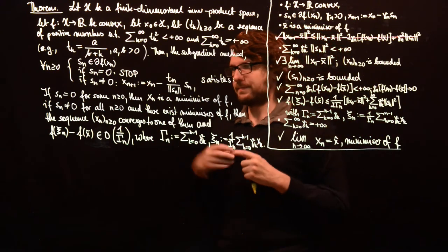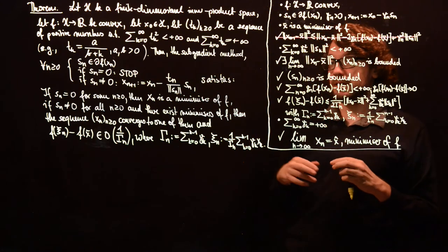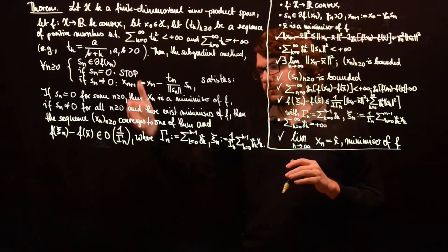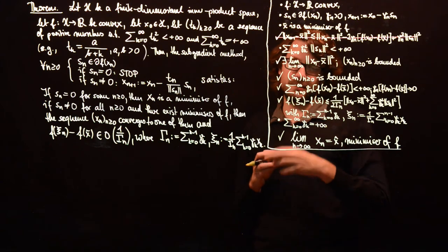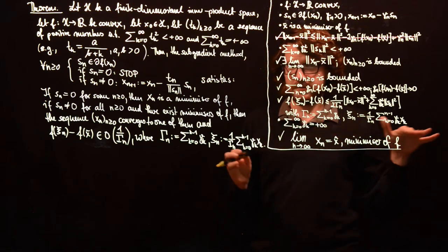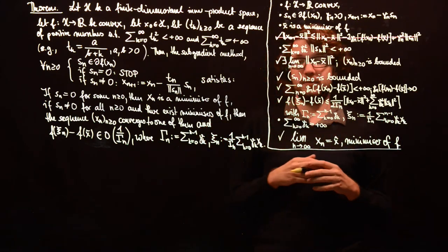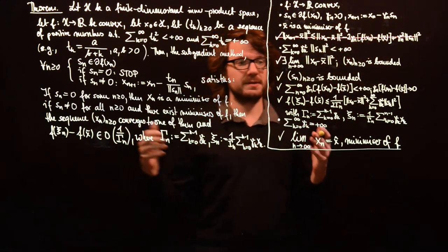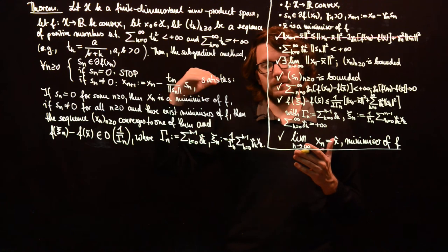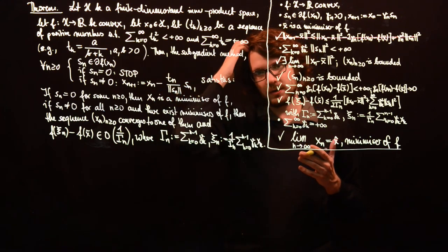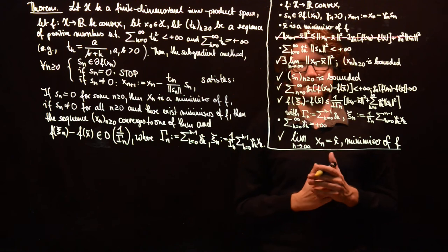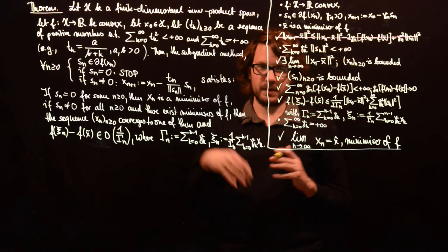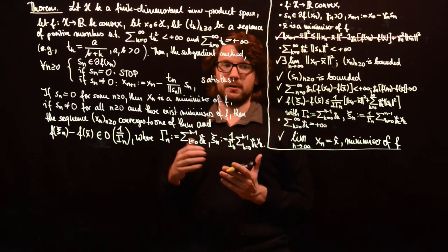But it's not really that you care about this so much. You cannot, at least not from what we have shown, we cannot guarantee that the sequence of s_n converges to 0. This would be a more interesting result because then you could use this as a stopping criterion. If your subgradient is small enough, then you just stop. But this is not the case as far as we know for our algorithm.